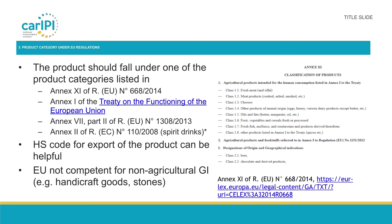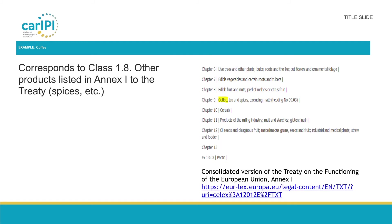The third heading in the summary specification is the product category under EU regulations. The product should fall under one of the product categories listed in different EU legal instruments. The European Commission will check whether the product to which the name extends refers falls under one of the product categories listed in the annexes of the relevant regulations or of the Treaty on the Functioning of the European Union. Please take into account that currently the EU is not competent for non-agricultural GIs, so a GI could not cover products such as handicraft goods or stones. The types of products covered are foods and foodstuffs, agricultural products, wines, spirits, etc.